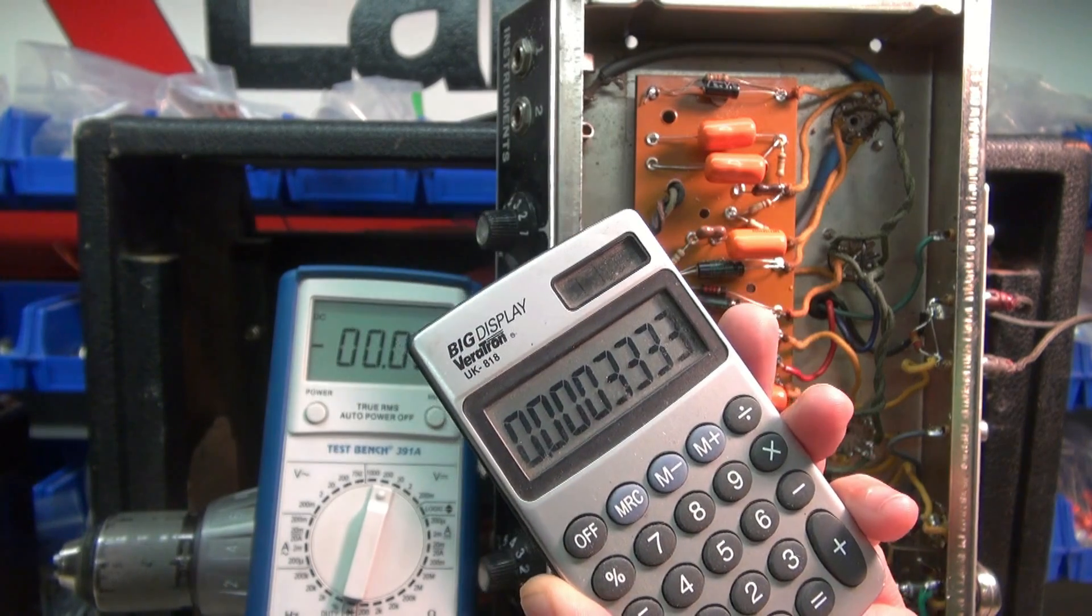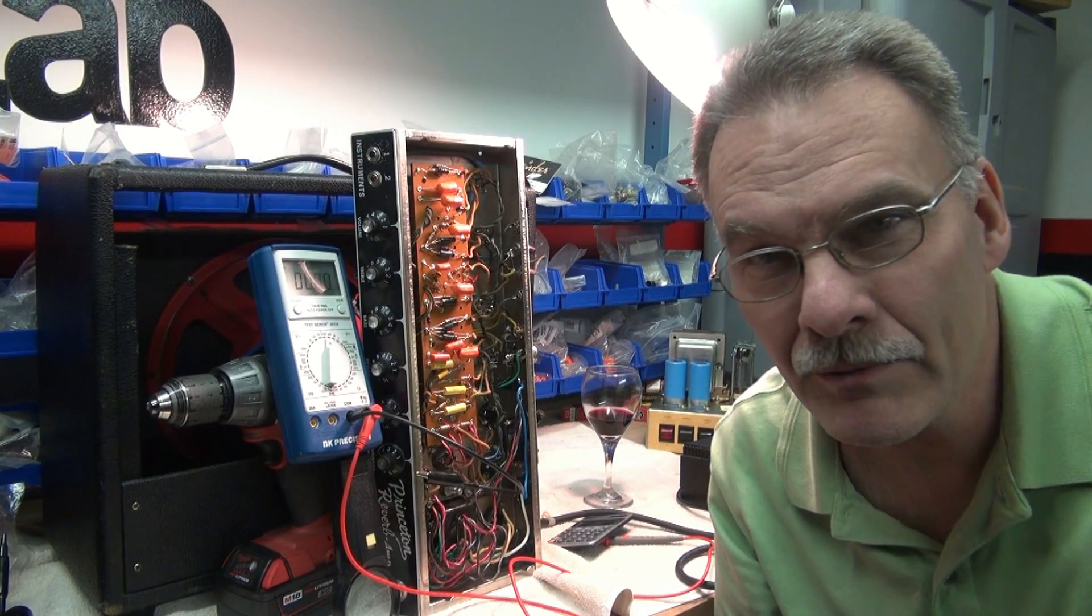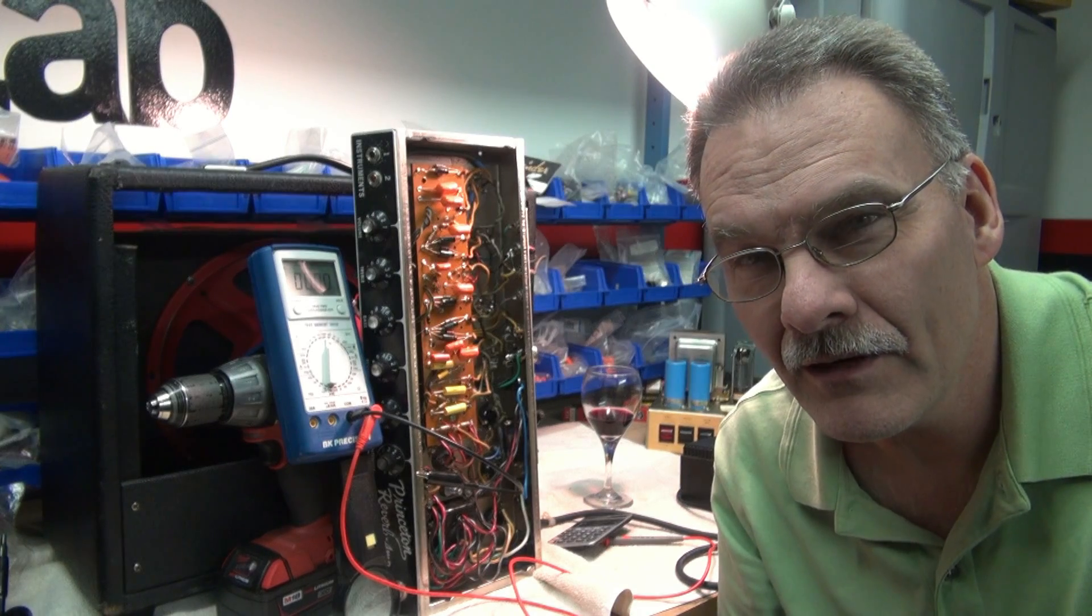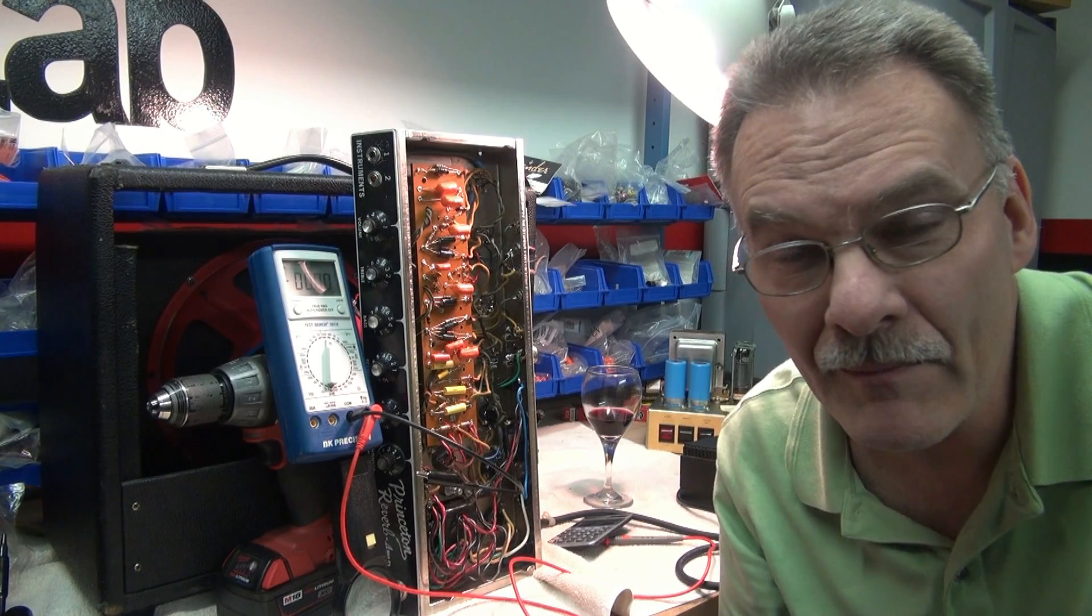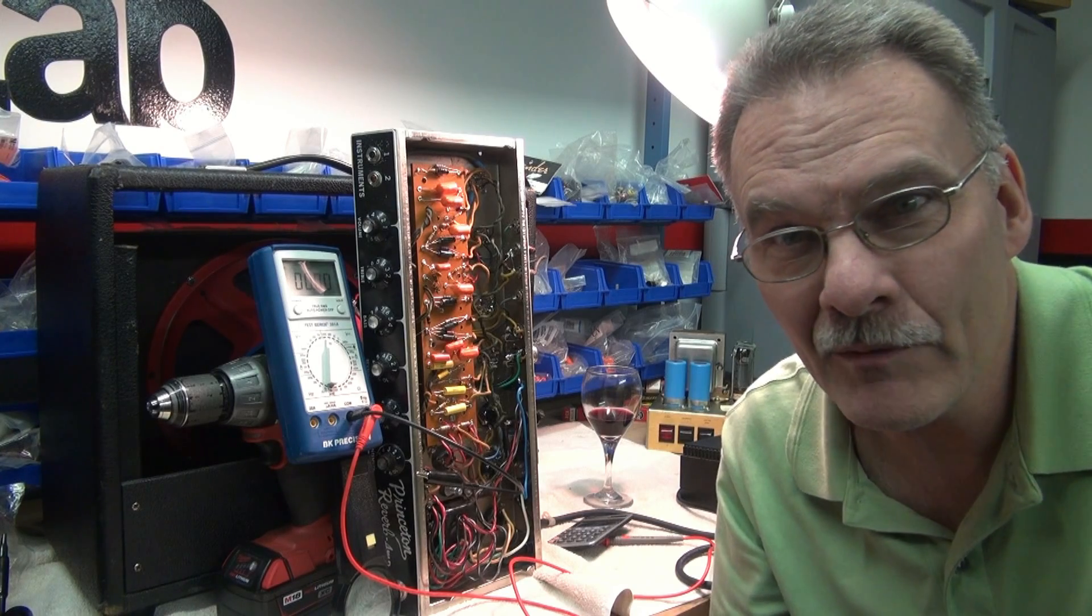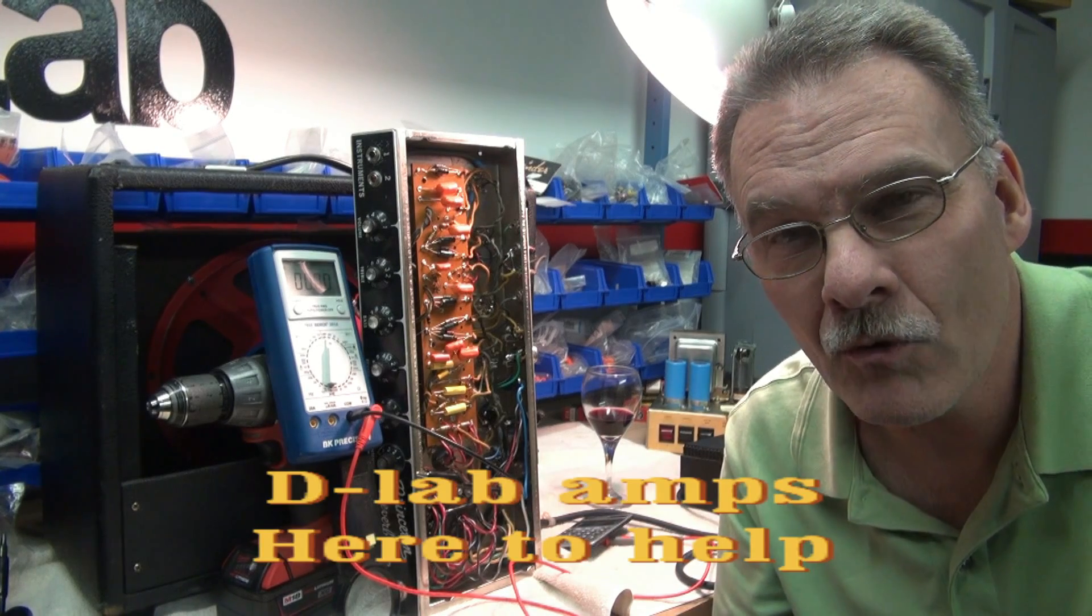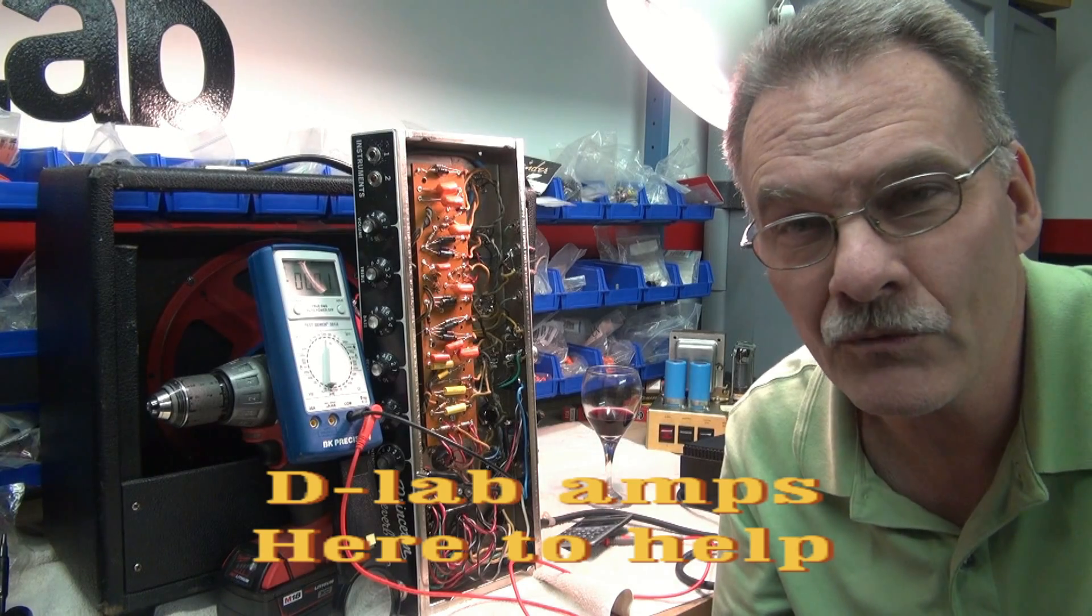Look at there, you don't need a tube checker. Okay, so mission accomplished. Now you have a way to tell if your 12AX7 tubes are working properly. I just saved you the cost of a tube checker. I'd say you owe D-Lab a beer. Anyway, I'll be posting more of these tech tips. I hope you found this information valuable. Thanks for watching.